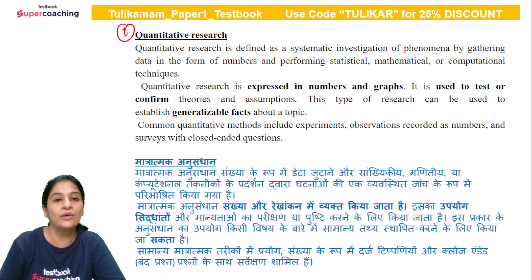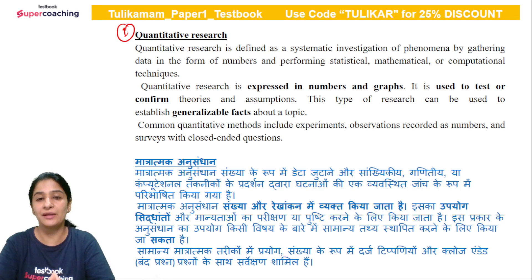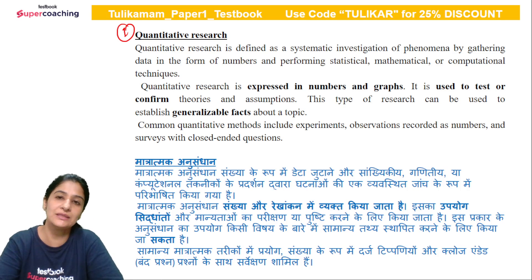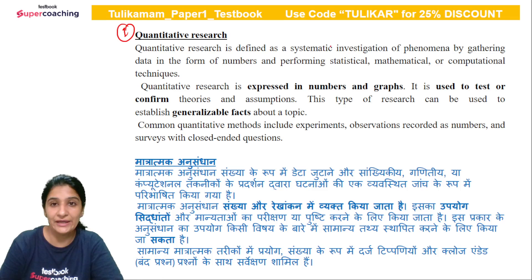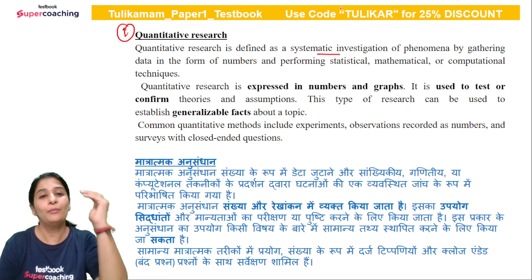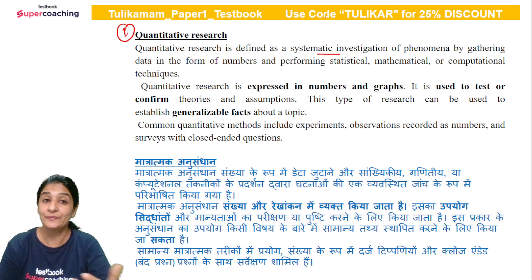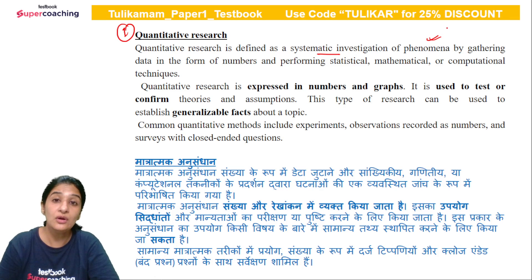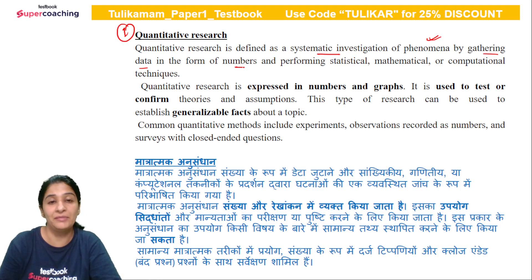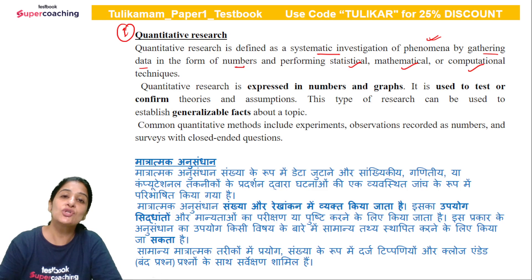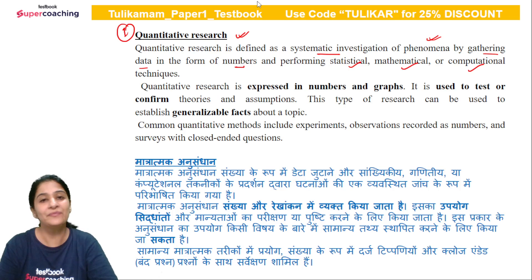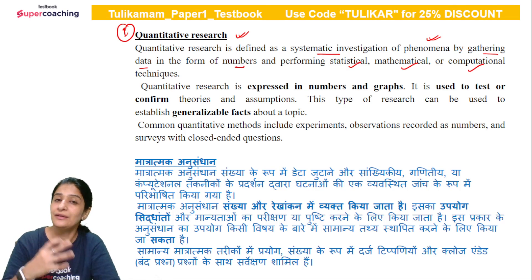The first research type we'll discuss today is quantitative research. The first thing that comes to mind when we think of quantitative research is numbers. Quantitative research is a very systematic, scientific investigation — step by step — of a phenomenon or event. This investigation is done by gathering data that comes to us in the form of numbers, after which we apply some statistical, mathematical, or computational technique to derive meaning from it.